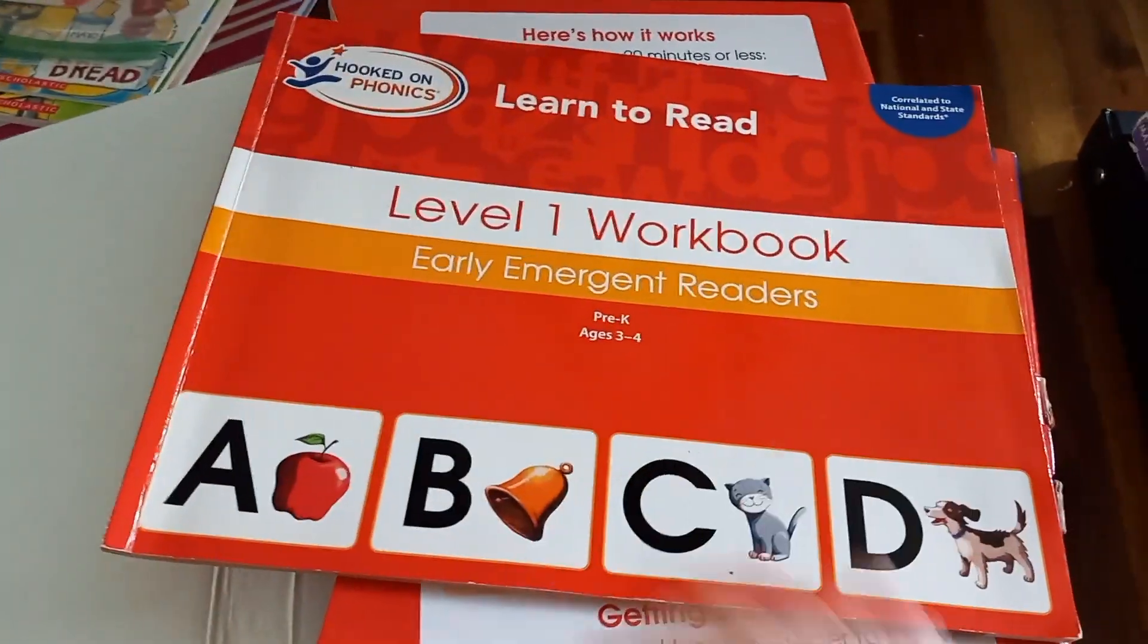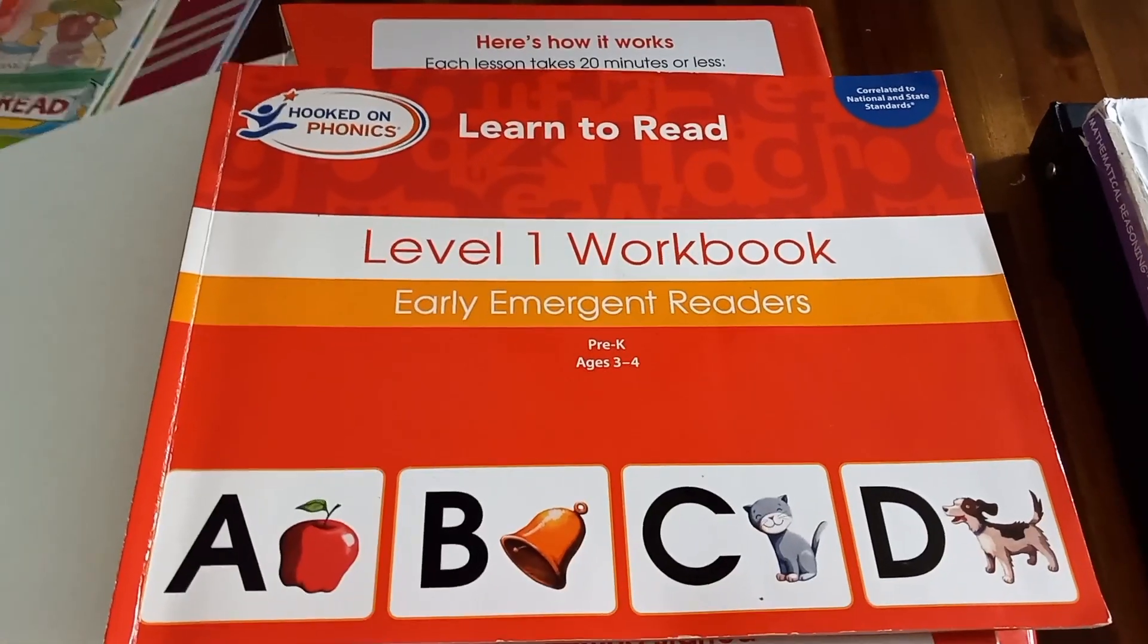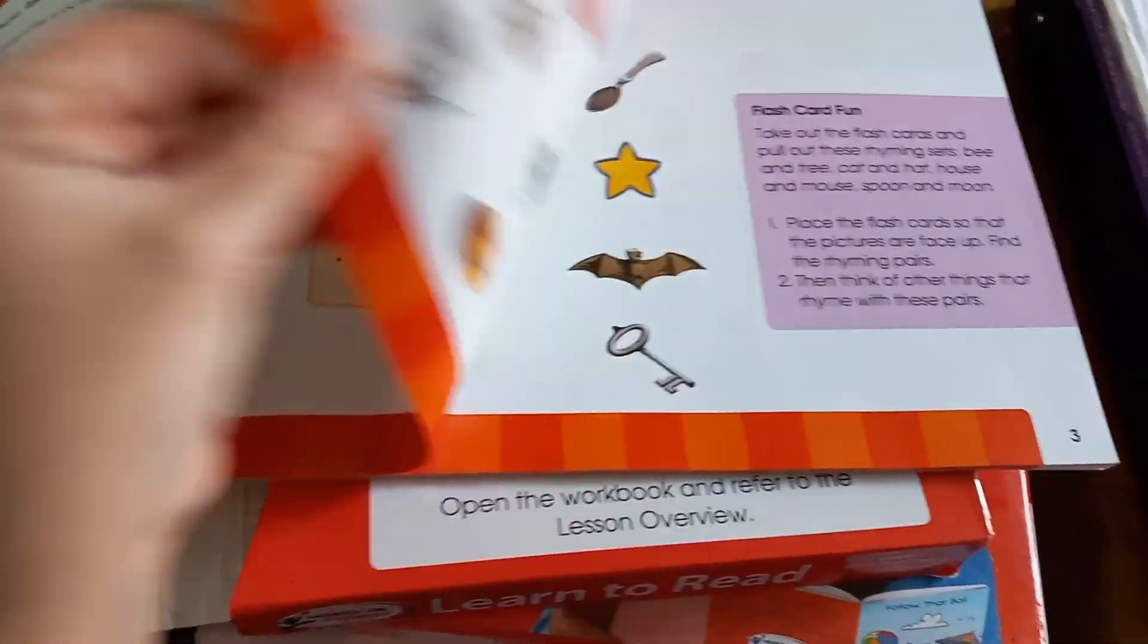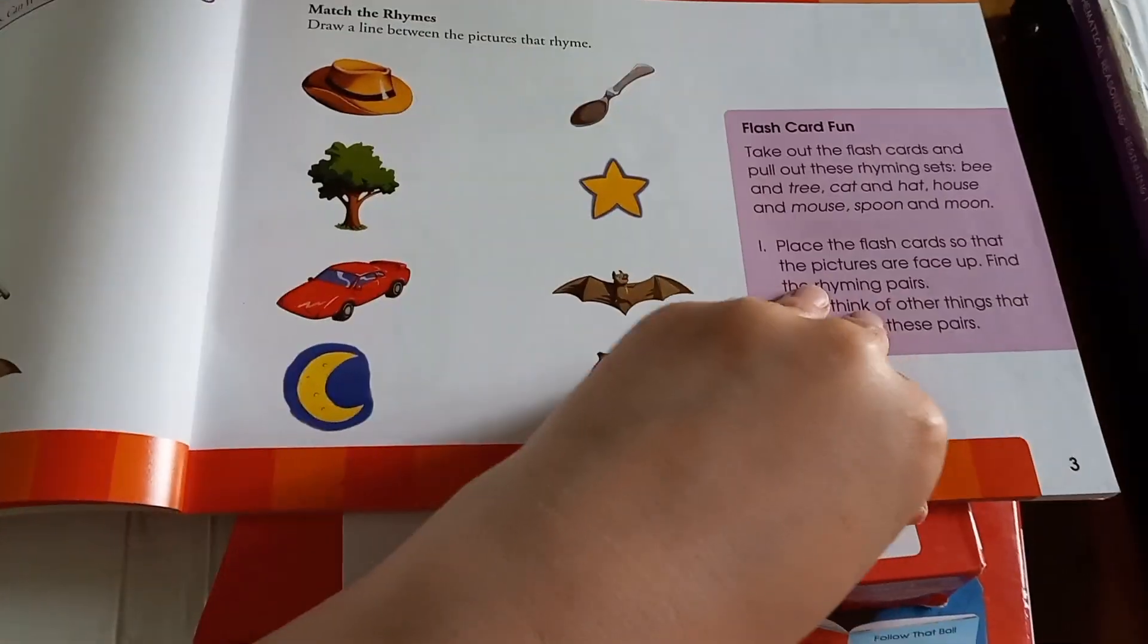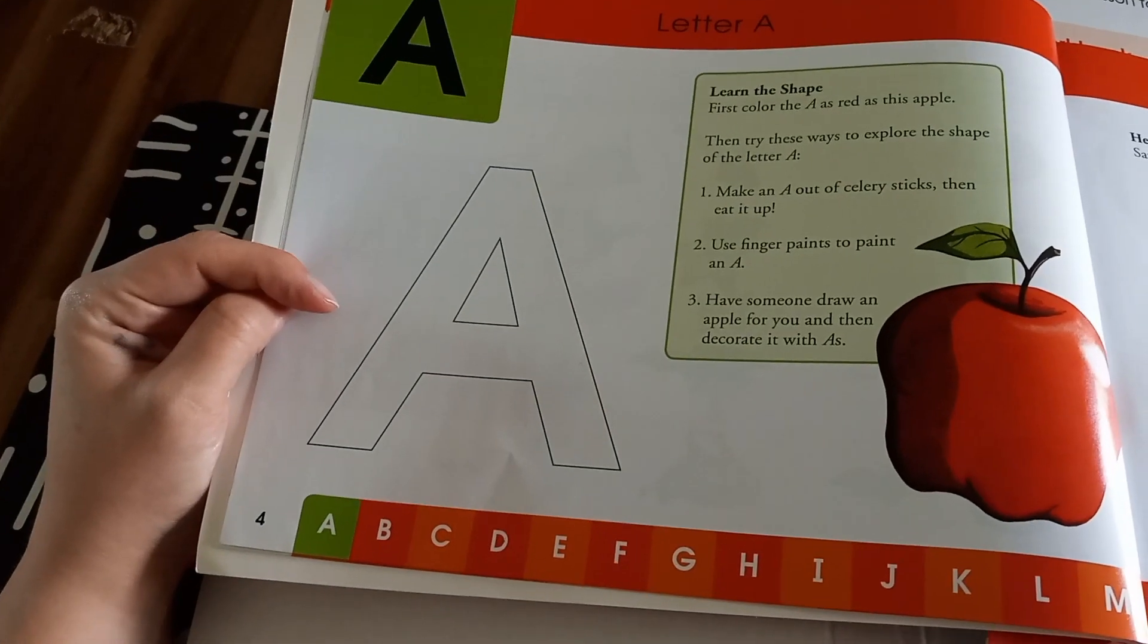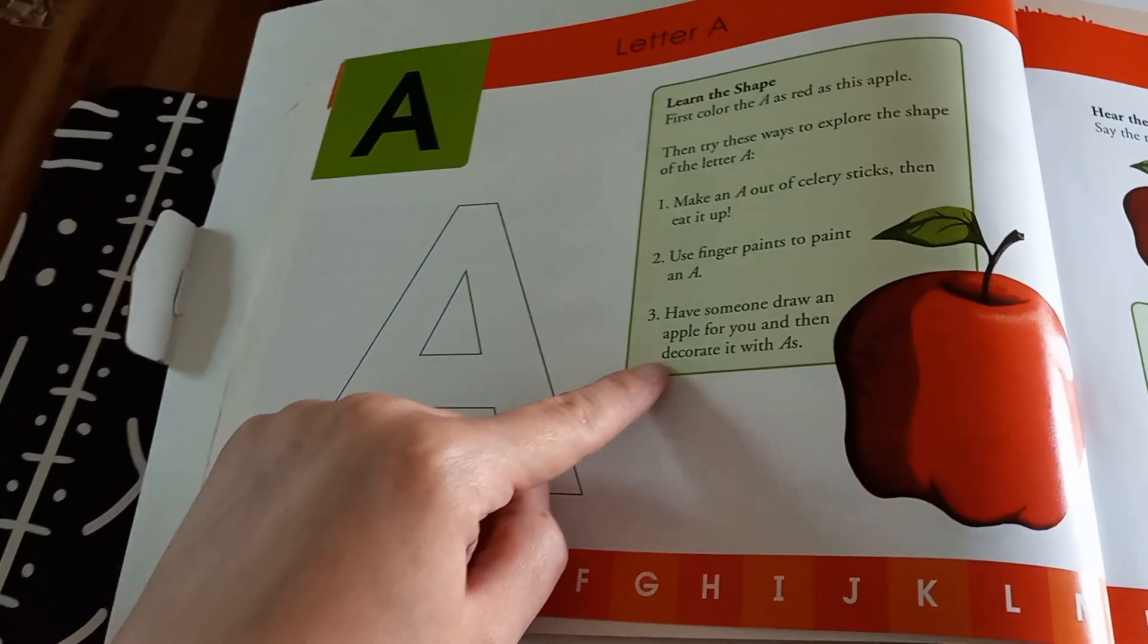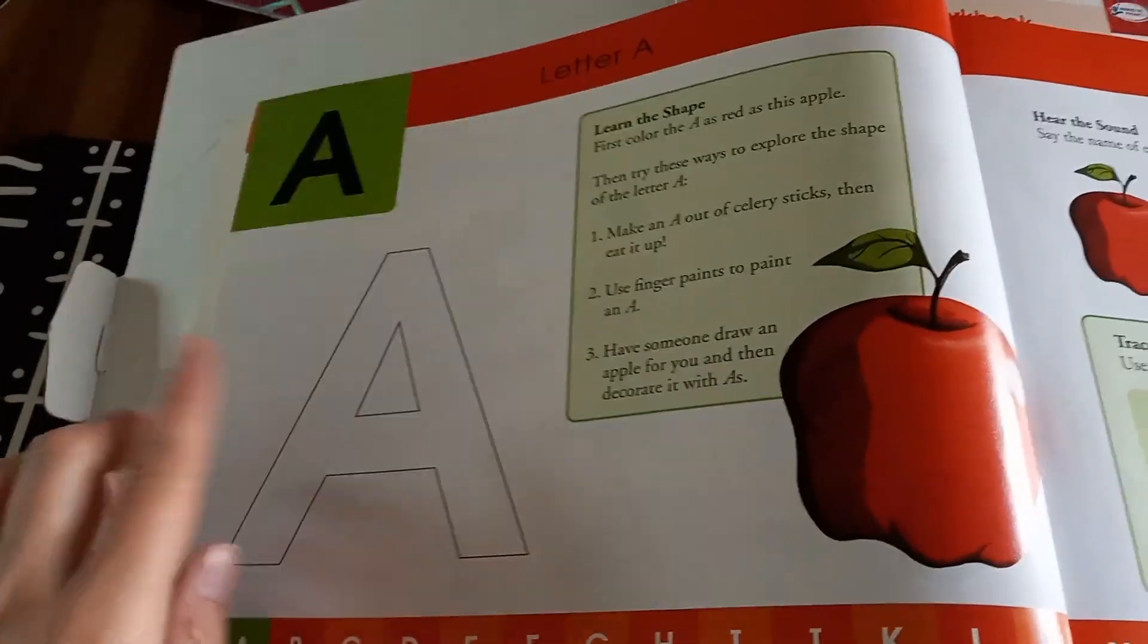So just to show you, this is the first. Level one focuses on capital letters, just like my writing book. And then level two will focus on capital and lowercase. So the first thing you do is it has the alphabet. You sing the alphabet with your child. It has some rhyming stuff. Then once you start getting to the letters, it has a letter page that says learn the letter. And you simply teach a child the letter and its sound. So A says ah.